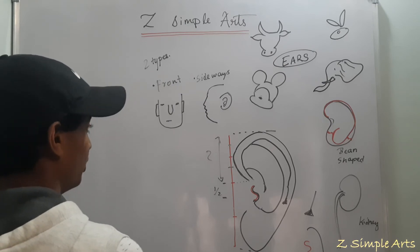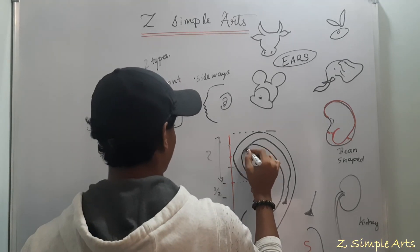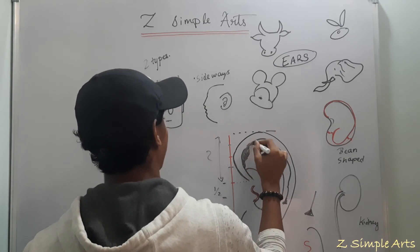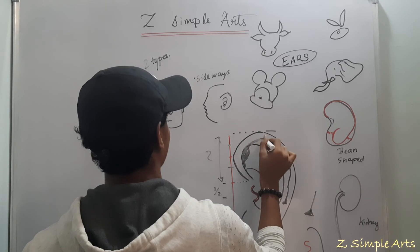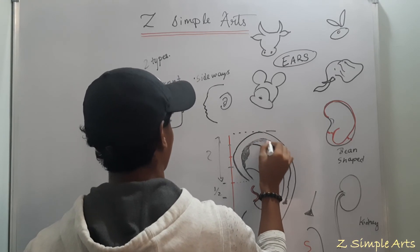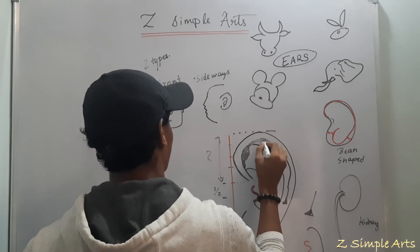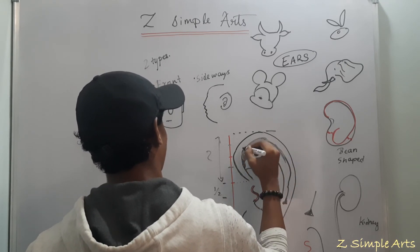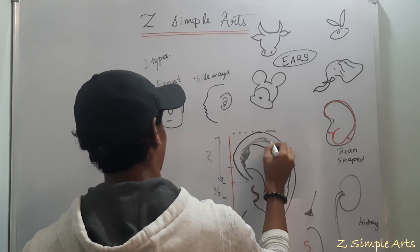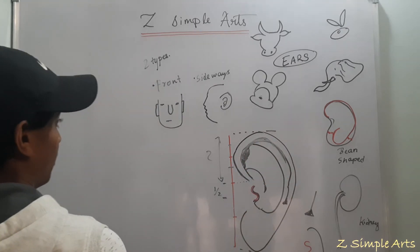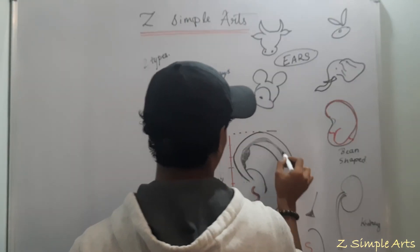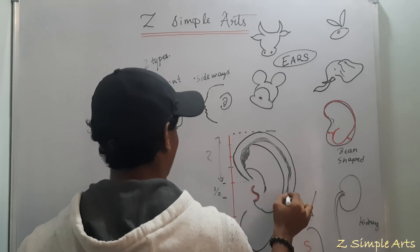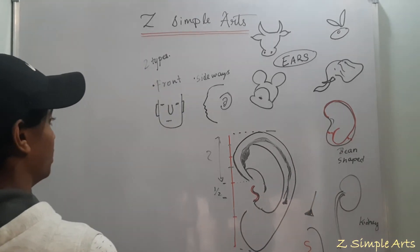And to make it more beautiful, we have to just shade the inward. Because the light won't pass inside of this part here. Since I am using a marker, it's not coming that properly. But when you are using a pencil on a paper, sheet of paper, it will come exactly as you desire. There you are, the ear.